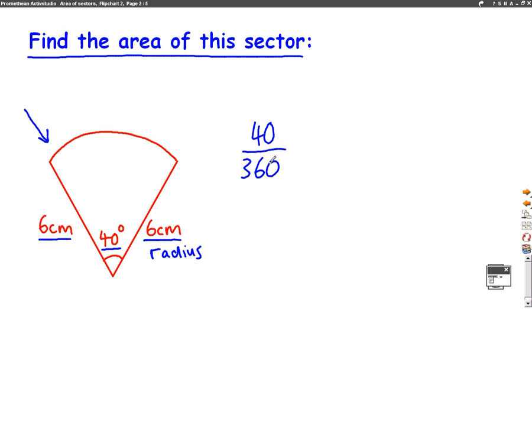And the question is looking for the area. So the area of the circle is in the formula pi r squared, or pi times r times r. So we can rewrite this now as 40 out of 360 times pi, which we know is 3.14, times the radius squared. And the radius we've said is 6 centimeters.